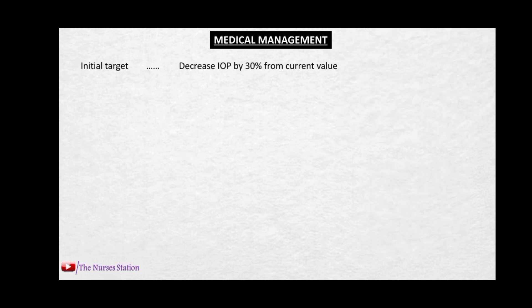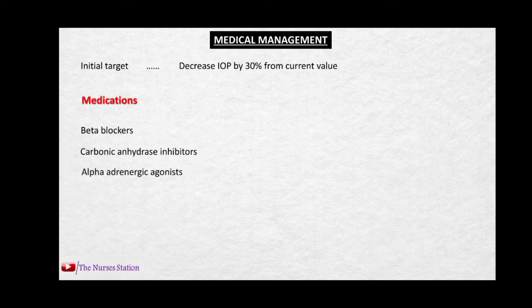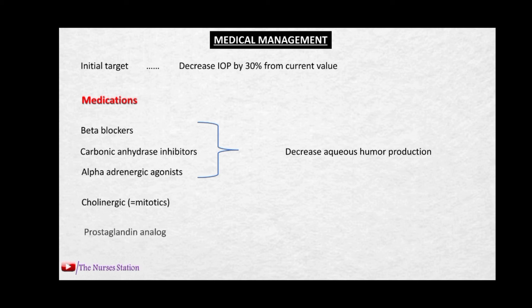For medical management, the initial target for a patient with glaucoma is to decrease the intraocular pressure by 30% from the current value. Medications used include beta blockers, carbonic anhydrase inhibitors, and alpha adrenergic agonists — all of which decrease aqueous humor production, thus decreasing intraocular pressure. Medications such as cholinergics (also called miotics) and prostaglandin analogues cause increased outflow of aqueous humor, also decreasing intraocular pressure.